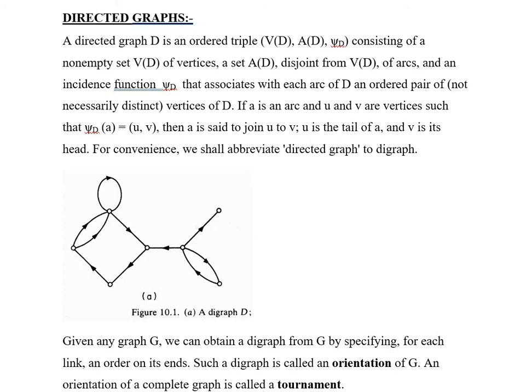an incidence function ψ_D that associates with each arc of D an ordered pair of not necessarily distinct vertices of D. If a is an arc and u and v are vertices such that ψ_D(a) equals ordered pair (u, v), then a is set to join u to v. U is the tail of